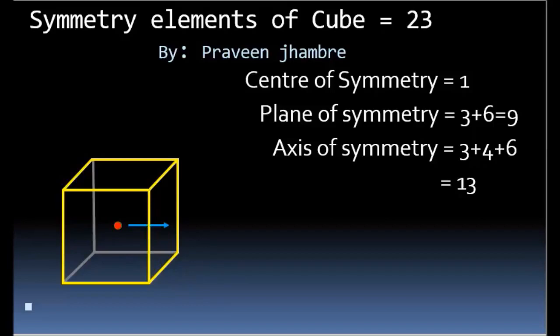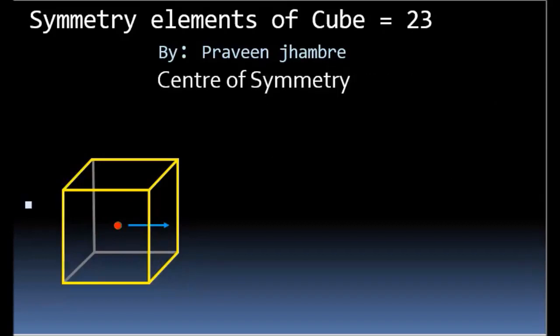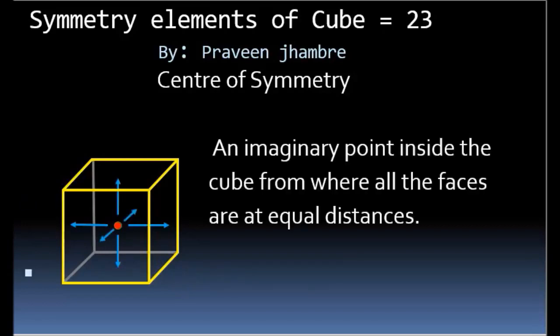What do we mean by center of symmetry? Center of symmetry means an imaginary point inside the cube from where all the faces are equidistant — that is, at equal distance. There is only one center of symmetry present in a cube.